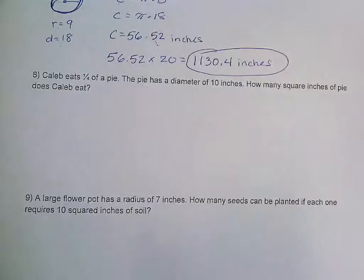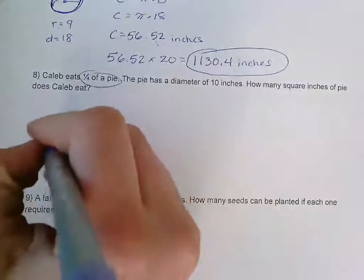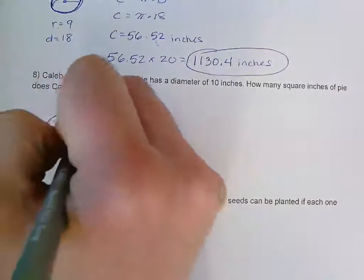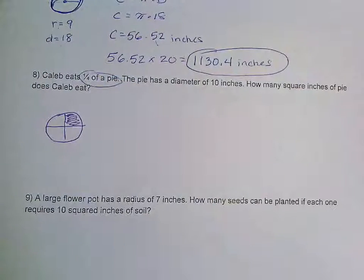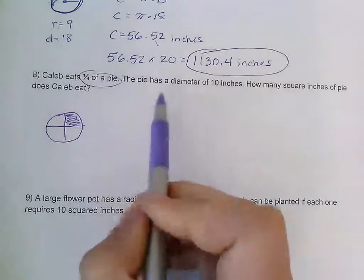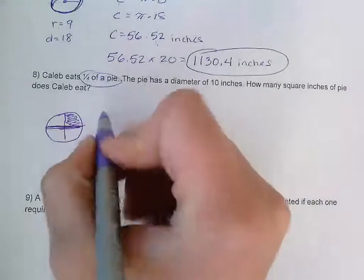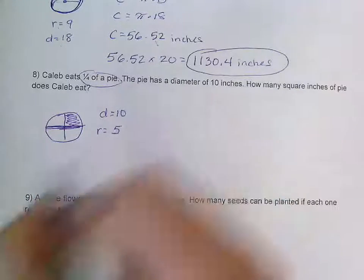So I noticed right away I have a couple pieces of information here. So he eats one fourth of a pie. So what I'm going to do is I'm going to draw out my circle for my pie. And I'm going to cut it into fourths. And I know that he's only going to eat one fourth. So the shaded part is the part that he eats. I also noticed that the pie has a diameter of 10 inches. So all the way across here is 10 inches. And that means that the radius or halfway is only five inches.